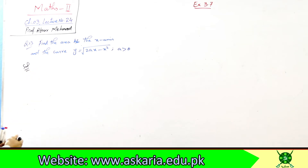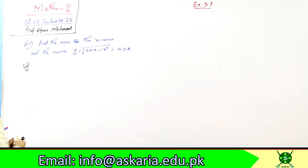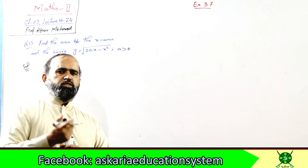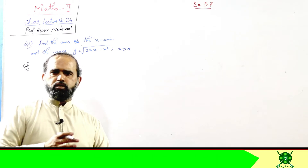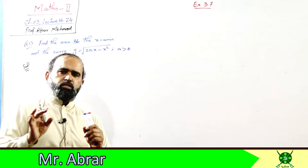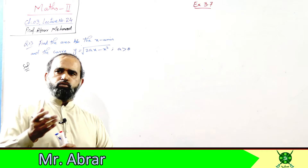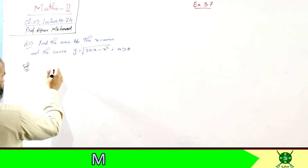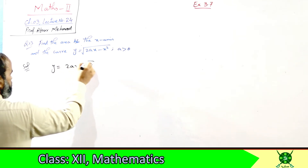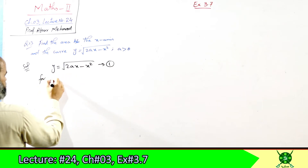Here, the starting and ending limits are not given, but there is a square root. The advantage of the root is that it can only give 0 or positive answers — it never gives a negative result. So we don't need to make a behavior table; we know the function is always non-negative. Let equation 1 be y = √(2ax − x²). We find starting and ending limits via x-intercepts.